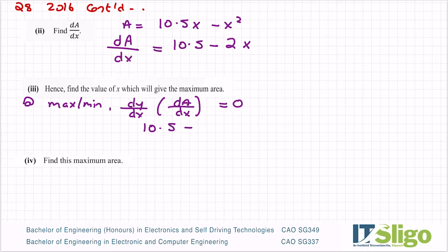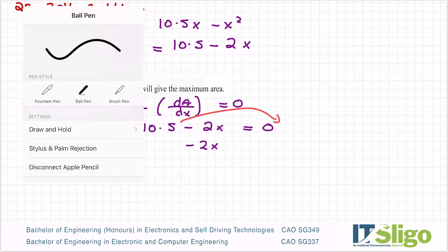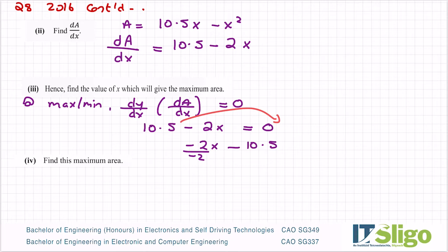Okay, so instead of da/dx, we have 10.5 minus 2x, and I'm saying let that equal to zero. Let's solve it for x. So minus 2x, bring him over the other side, and he'll become minus 10.5. Divide both sides by minus 2. He will cancel, and we end up then getting x is equal to minus 10.5 over minus 2, which is equal to plus 5.25. Why? Because minus over minus cancels to give you a plus. So the x value which will give me my maximum area is 5.25. So the answer to that one: x is equal to 5.25.